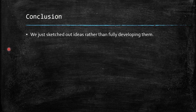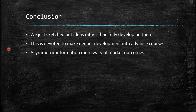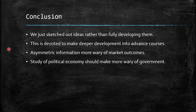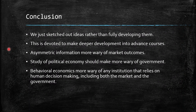As a conclusion, we have sketched out the amazing topic of microeconomic frontiers. These are complex areas that are more deeply developed in advanced courses. Asymmetric information makes us more worried about market outcomes. Political economy makes us more worried about government. Behavioral economics makes us more worried about any institution that relies on human decision-making, including both the market and the government. Thank you so much for your time. Continue studying economics.